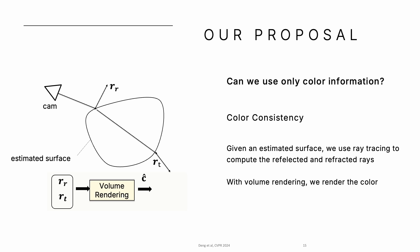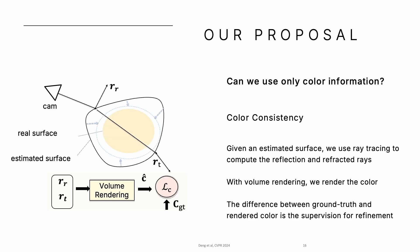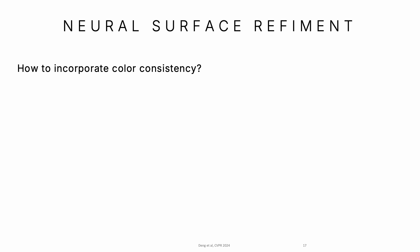With volume rendering, we render a color. The difference between ground truth and rendered color guides surface refinement. How do we incorporate color consistency for refining the surface?